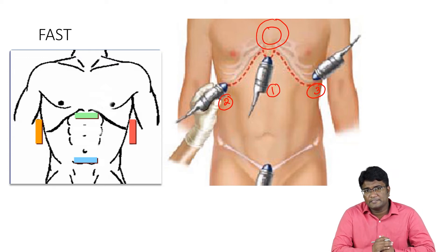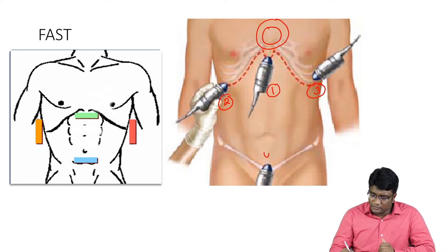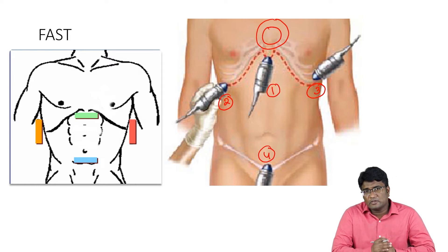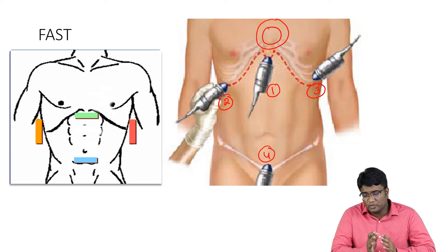The third area we put our probe is in the left flank region, in the region of the spleen. When we put the probe at the left flank region, we are trying to look for any collections in the perisplenic region or in the left paracolic gutter. The next view is in the suprapubic region to look for any pelvic hematomas or collections.